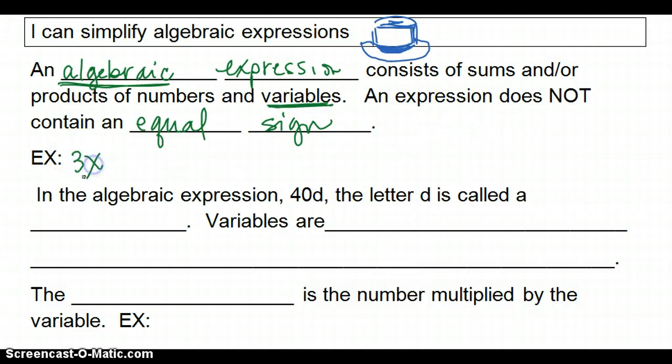For example, 3x is an expression with one term. 2a plus 5 is an expression with two terms. We can even have division, like 2ab over 3 is an expression.